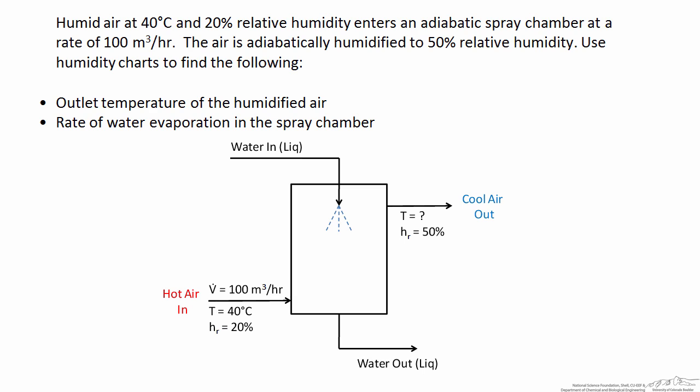In this example, we have humid air that's at 40 degrees C and 20 percent relative humidity that enters an adiabatic spray chamber at a specified rate, and the air is adiabatically humidified to 50 percent relative humidity. We want to use the humidity charts to find the outlet temperature and the rate the water is evaporating in the spray chamber.